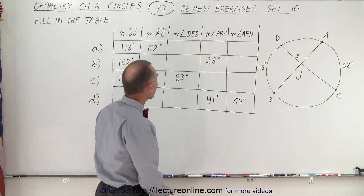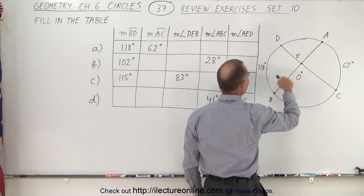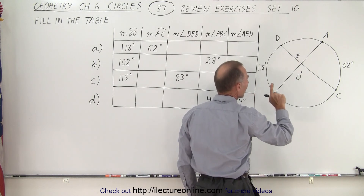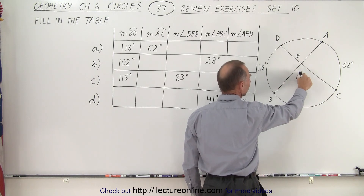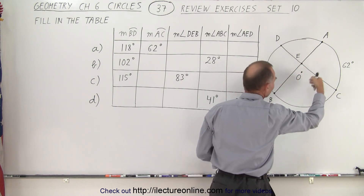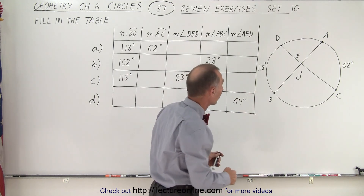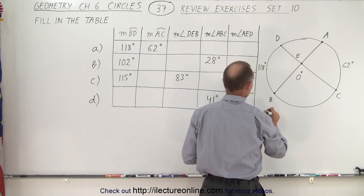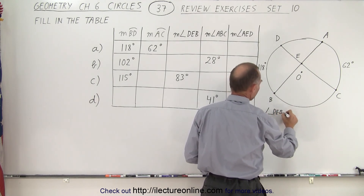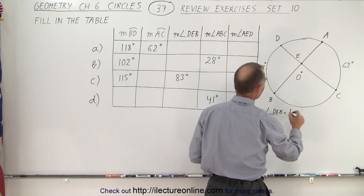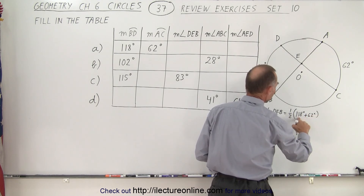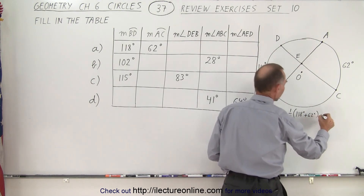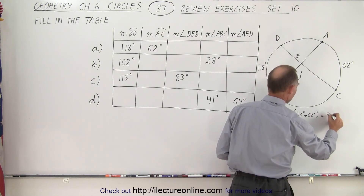Let's start with the measure of the angle from D to E to B. That's going to be half the sum of these two arcs, because the point is offset from the center, so we take the average of those two angles. The measure of angle D-E-B is equal to one half the sum of 118 degrees plus 62 degrees. When you add those together that gives us 180 degrees, so this is equal to 90 degrees.